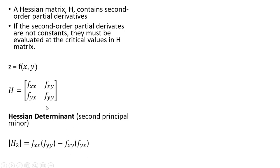And the first principal minor is just going to be the partial derivative of the function with respect to x twice.